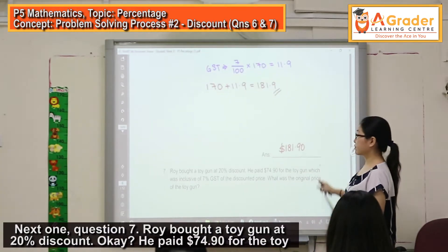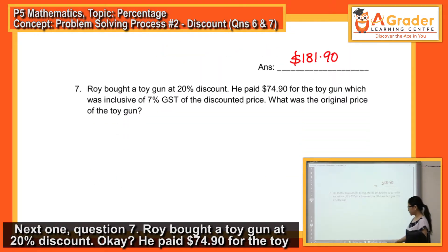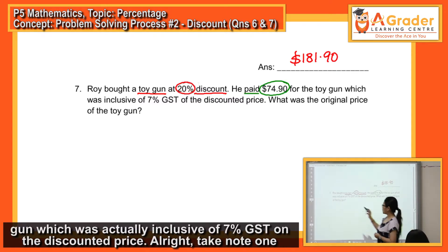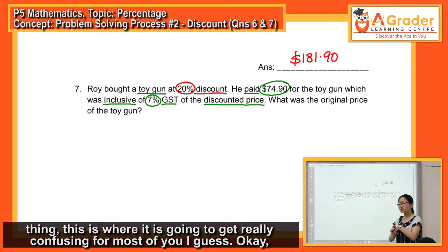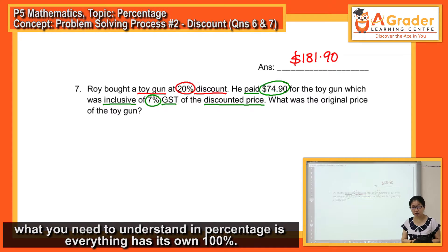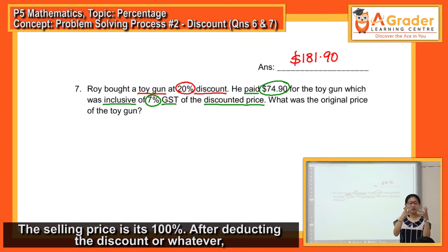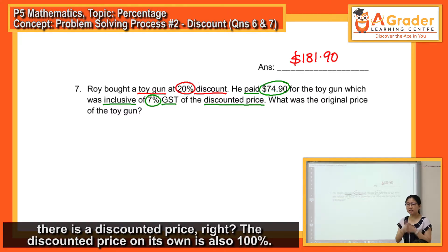Roy bought a toy gun at 20% discount. He paid $74.90 for the toy gun, which was actually inclusive of 7% discount and GST on the discounted price. Alright? Take note of one thing. This is where it's going to get really confusing for most of you, I guess. What you need to understand in percentage is everything has its own 100%. The selling price is 100%. After deducting the discount or whatever, there's a discounted price. The discounted price on its own is also 100%.